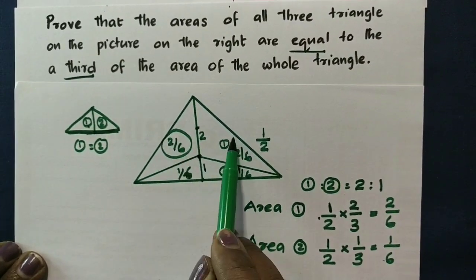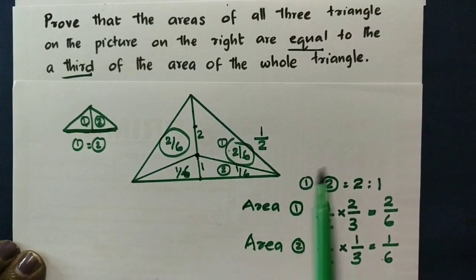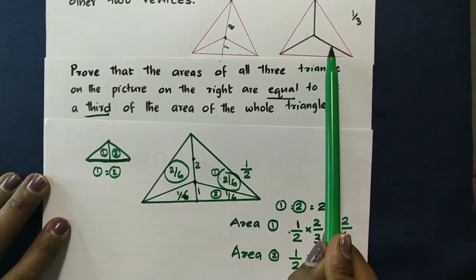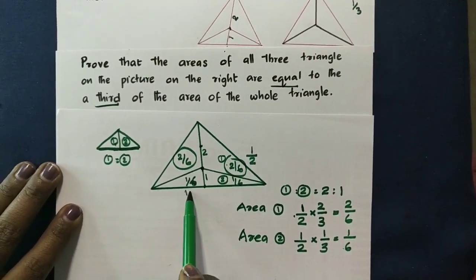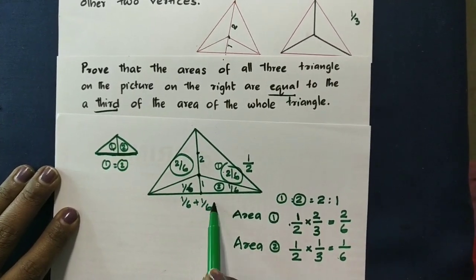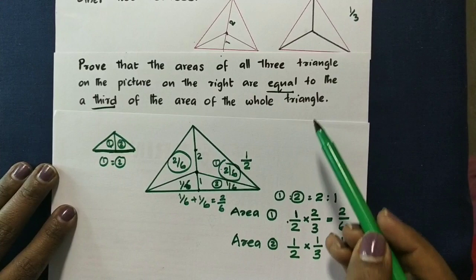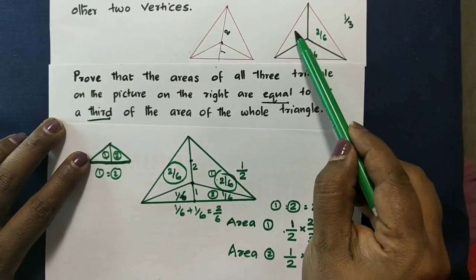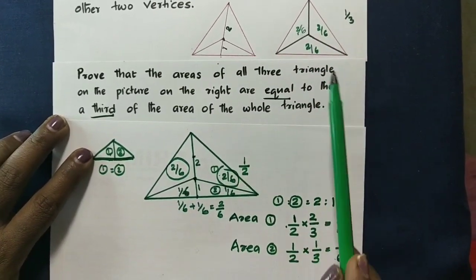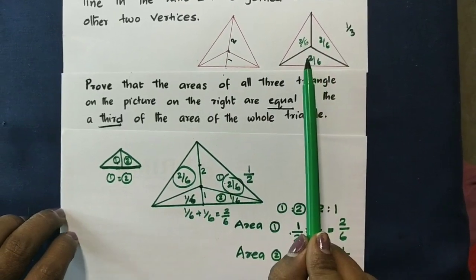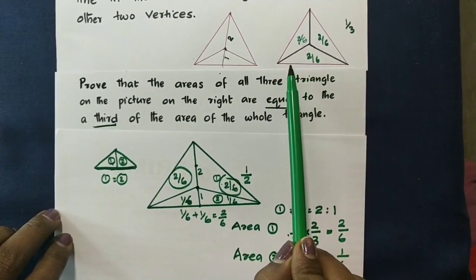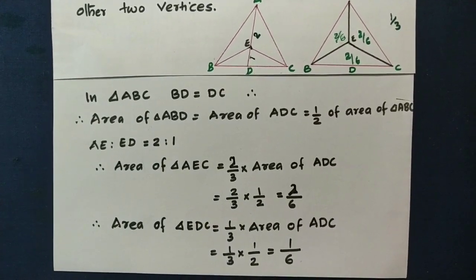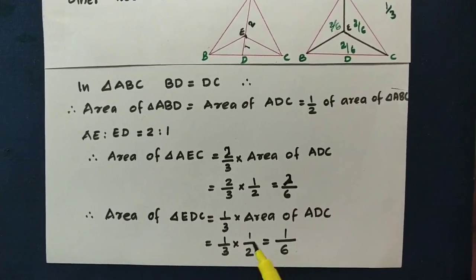So this is 2 by 6. We are going to do 1 portion. So 1 by 6 plus 1 by 6 is equal to 2 by 6. And 2 by 6 is equal to 2 by 6. That is the whole triangle area — it comes to one third. We have to learn about this.